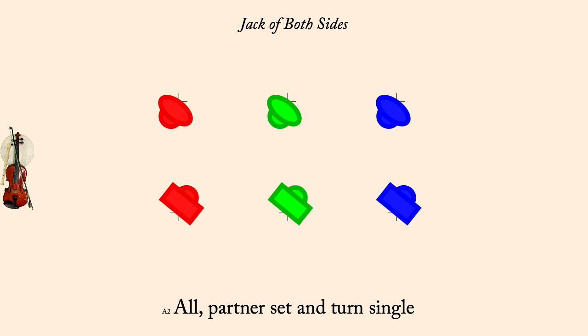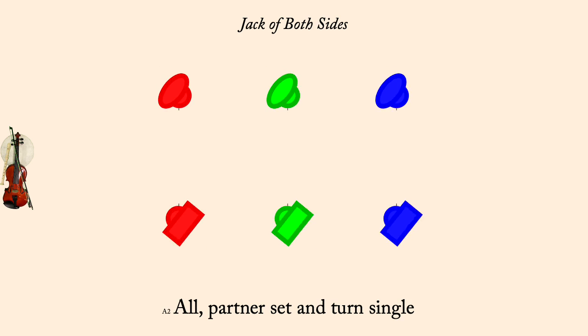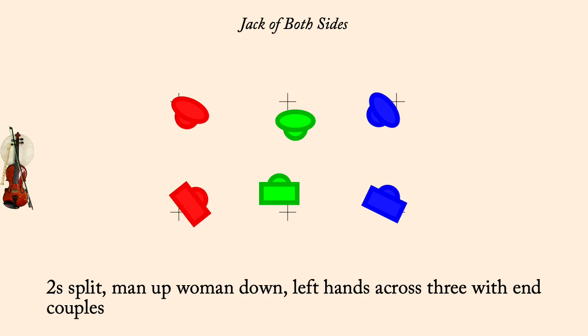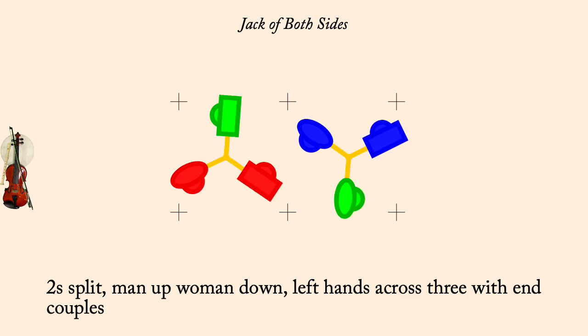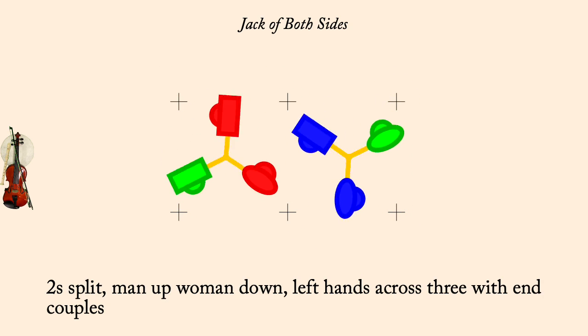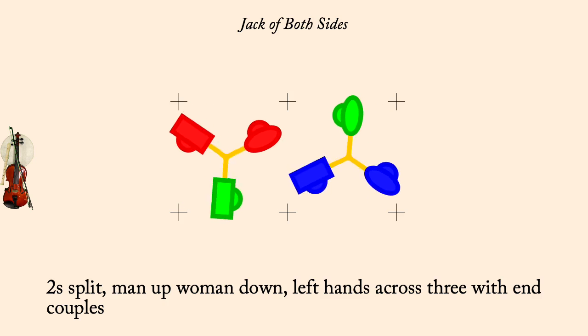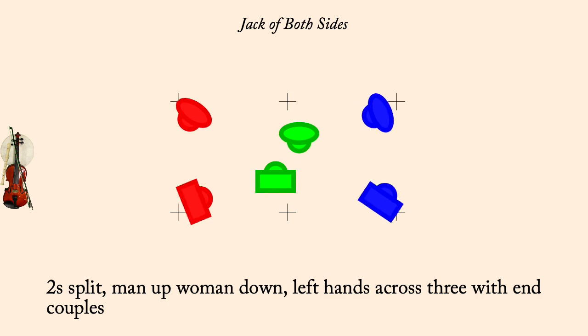Twos split — man up, woman down — left hands across three with end couples. Ones cast down, twos cross up, double full figure eight.